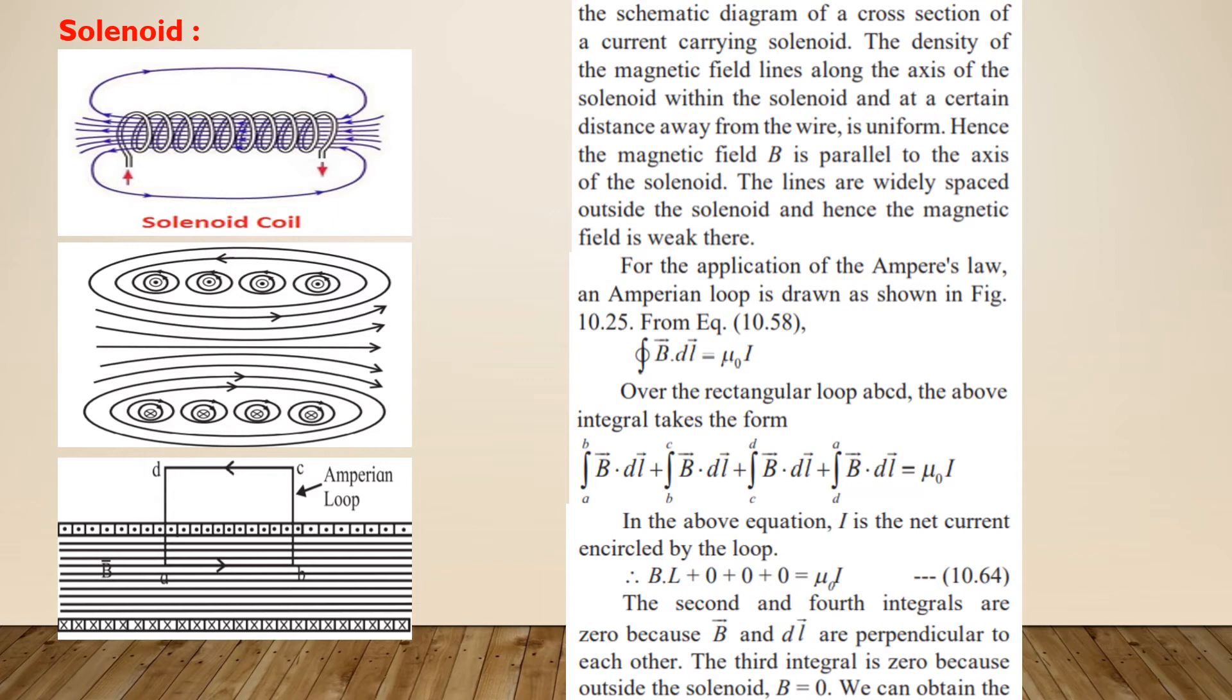In the above equation, the second and the fourth integrals are 0 because B bar and DL bar are perpendicular to each other. The third integral is also 0 as the field outside the solenoid is 0. Hence, only first integration remains which gives us B dot capital L where capital L is the length of the side AB of the loop is equal to mu0 I.